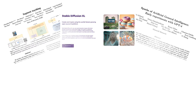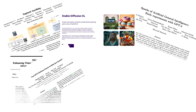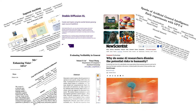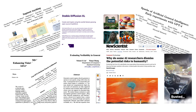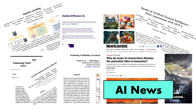We have Segment Anything from Meta, Sparks of AGI from Microsoft, Stable Diffusion XL from Stability, and MiniGPT-4 from KAUST. Can GPT-4 perform neural architecture search? Are generative search engines riddled with attribution errors? Why do some AI researchers dismiss the potential risks to humanity? And a viral TikTok video of a driverless car being pulled over by the police. Welcome to AI News.